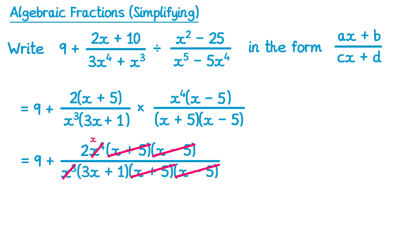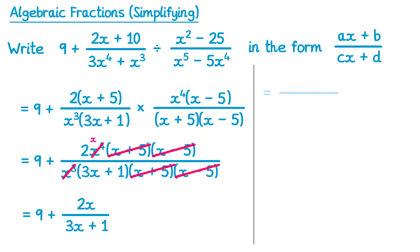So we can now rewrite this as 9 plus, and then on the top we have 2x, and on the bottom we've just got that one bracket, 3x plus 1. Now we're trying to write it in the form given on the right hand side, so we need to get these into one fraction. We're going to rewrite them both over a common denominator. The denominator we're given is 3x plus 1, so we'll need to write the 9 over 3x plus 1 as well. If we were to write the 9 as a fraction over 3x plus 1, we would multiply the top and bottom by 3x plus 1, giving us 9 lots of 3x plus 1 over 3x plus 1, which is the same as 9.